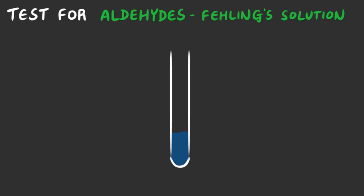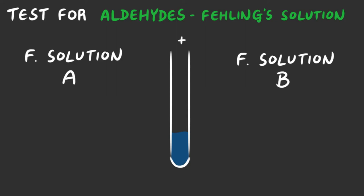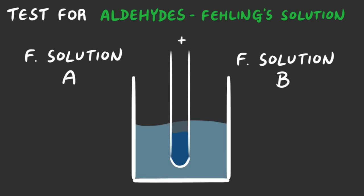In the second method, using Fehling's solution, firstly add 10 drops of Fehling's solution A — otherwise known as Fehling's solution 1 — into a test tube. Then add Fehling's solution B, or solution 2, until you form a deep blue solution. Add your organic compound to the solution and heat in a water bath for a few minutes, and a positive result for an aldehyde would be a color change from the deep blue into a brick red.